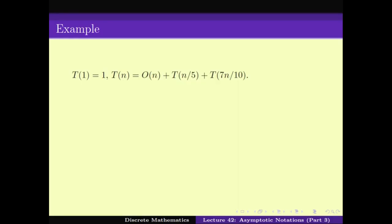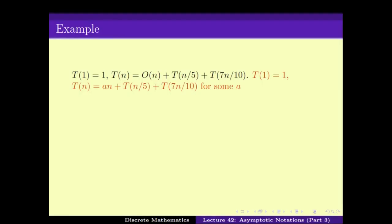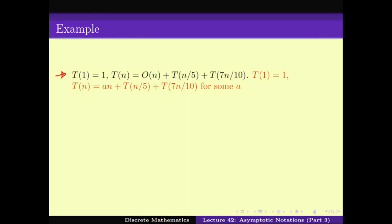Here is one more example: T(N) = O(N) + T(N/5) + T(7N/10). When we write O(N) in the expression, it means there exists some constant A for which T(N) = A·N + T(N/5) + T(7N/10). This kind of expression is used a lot in the analysis of algorithms when we count steps but are not exactly sure of the constants, so instead of putting 5N or 3N, we just write order N.